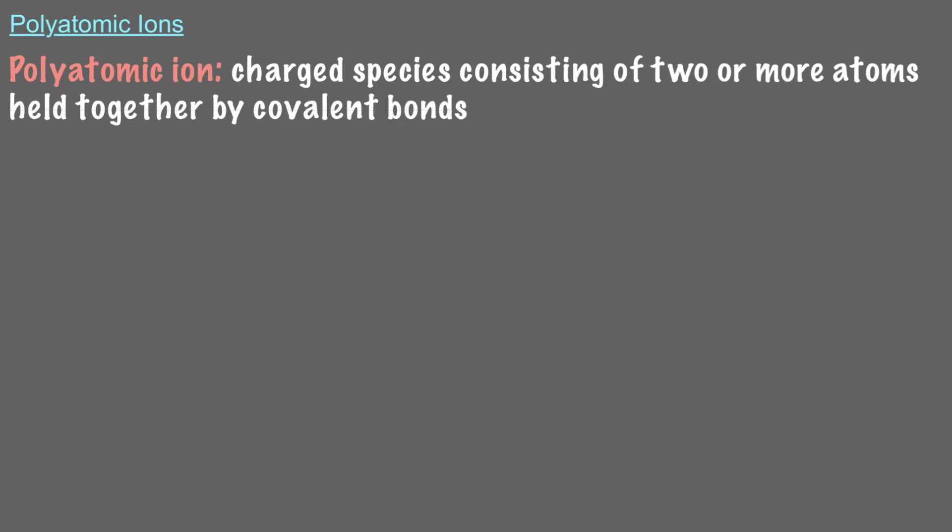A polyatomic ion is a charged species consisting of two or more atoms held together by covalent bonds. Due to these two properties, polyatomic ions are both molecular and ionic in nature.